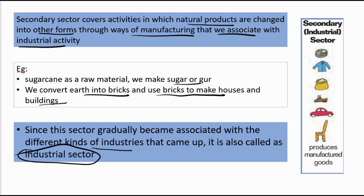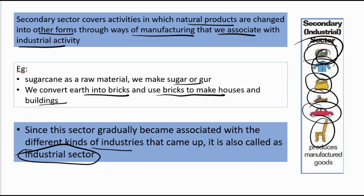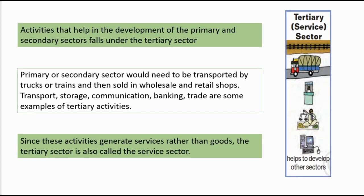After the secondary sector, we have the tertiary sector. The vegetables you get, you cook them — cooking is a tertiary activity. Making clothes is secondary, but selling them is tertiary. Converting rice into a cookable format is secondary; selling shoes or furniture made from timber through a shopkeeper is a tertiary service.